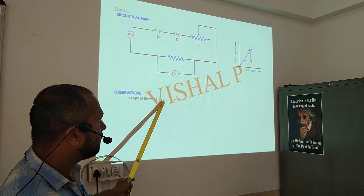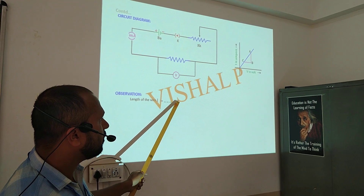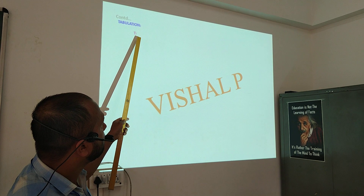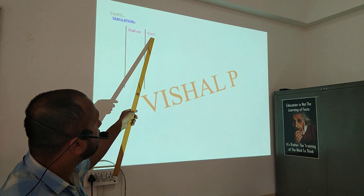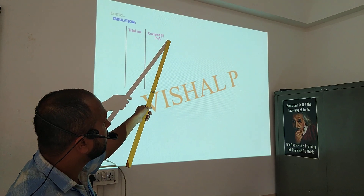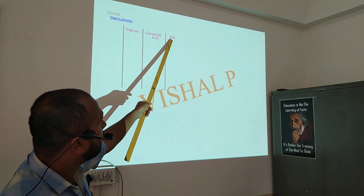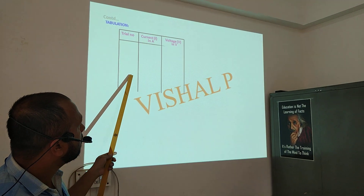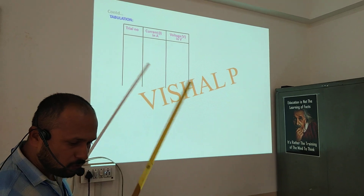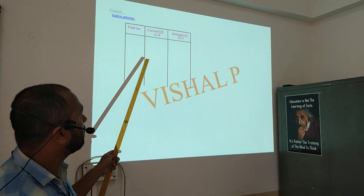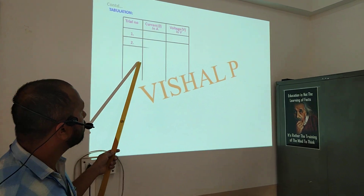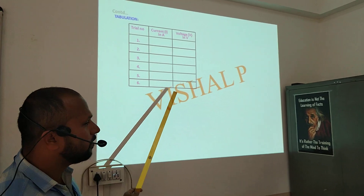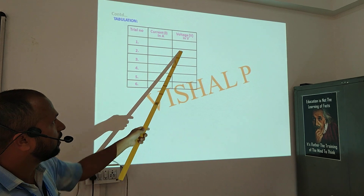Length of the wire: you will write the length of the wire in centimeters. Next, tabulation. Here, trial number. Here, you will record current in ampere, and here, you will record voltage in volt. Since this experiment has a graph, you will take at least 6 readings — 1, 2, 3, 4, 5, and 6. You will perform the experiment and fill the readings here.